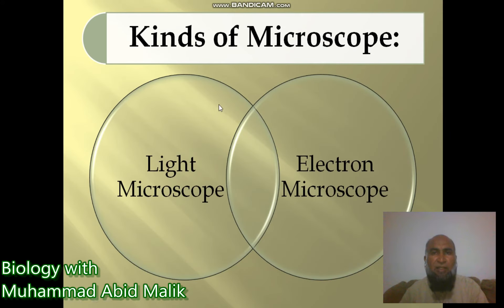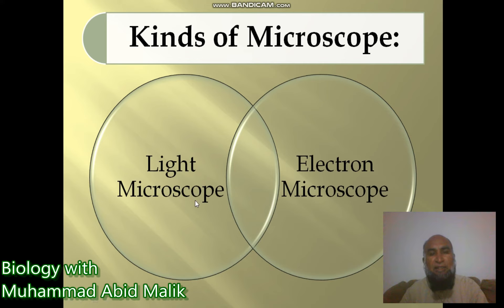There are two kinds of microscopes according to our syllabus: the light microscope and the electron microscope. Today's objective covers the light microscope, while the electron microscope will be discussed in the next lesson.